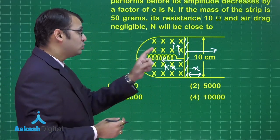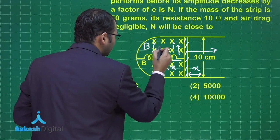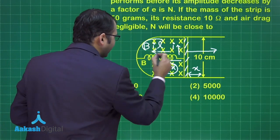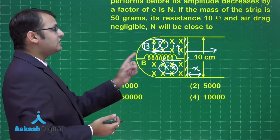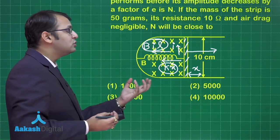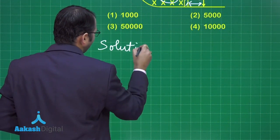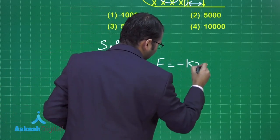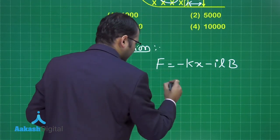The induced current is in the upward direction, generating an additional magnetic Lorentz force equal to Bil. Both kx and Bil are opposite to the direction of displacement, acting as restoring forces to return the system to its original position.